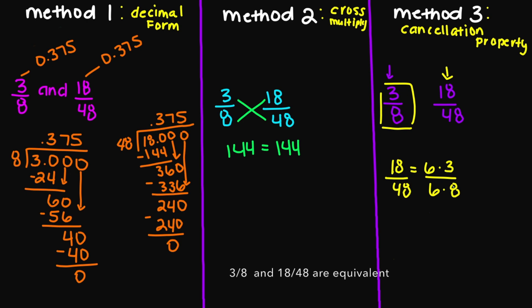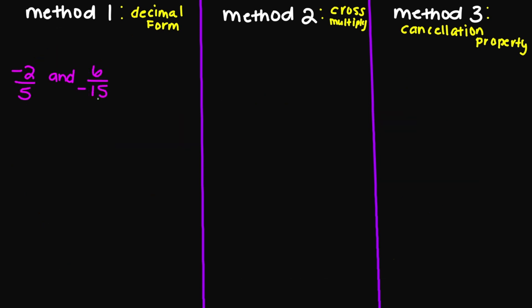Notice here that my sixes are going to cancel out. And you're going to be left with 3 over 8, which is what we have here.